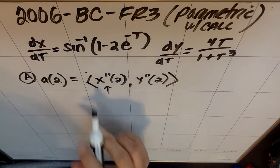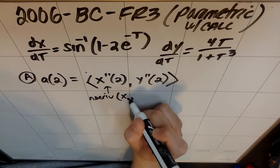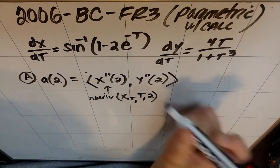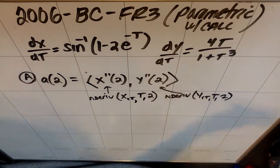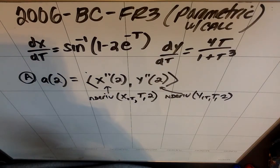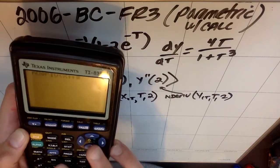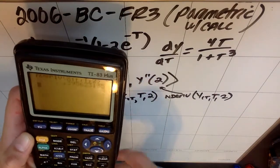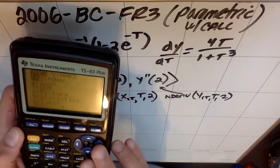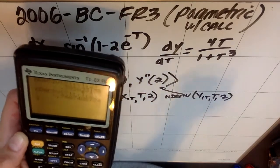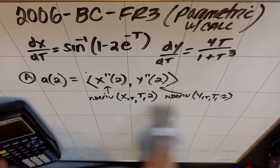In order to find that, I'm going to have to derive this guy. So this is going to end up being x double prime at 2, comma y double prime at 2, which is a thing that your calculator can do for you. I want my calculator to derive, so I'm going to pick math 8, which is N derive. I want my calculator to derive X1t with respect to t at 2. And I'm going to do the same thing where I do math 8, N derive of Y1t with respect to t at 2.